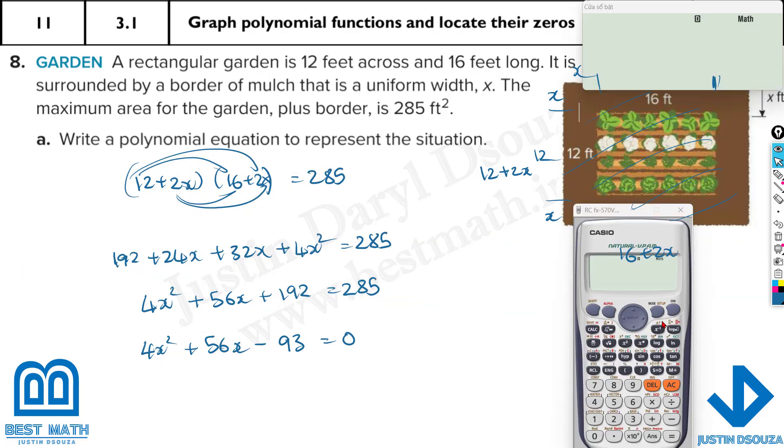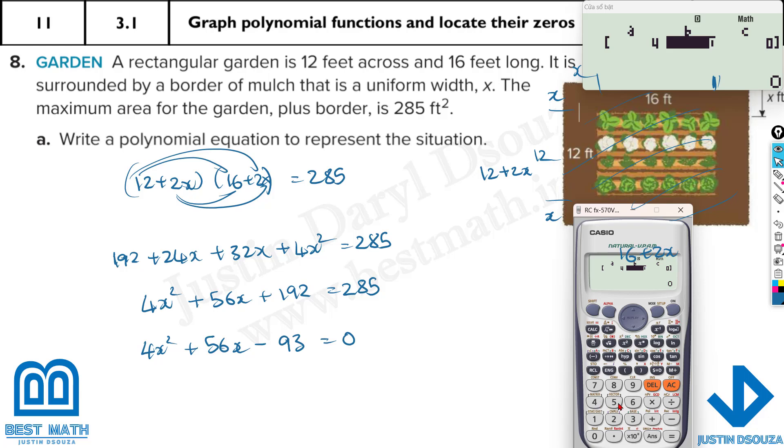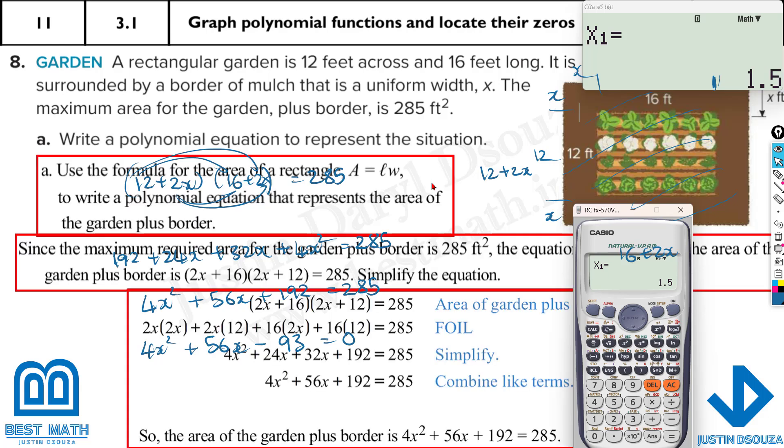You can just put it in the calculator by mode 5 and 3 because it's power 2. And now looking at the value of x: 4, then we have 56, and then we have minus 93. The answer is x can be 1.5 or negative. Which is the more possible answer? You can't have negative numbers. This doesn't make sense. So the x value, the width, has to be 1.5 feet. That is the answer.